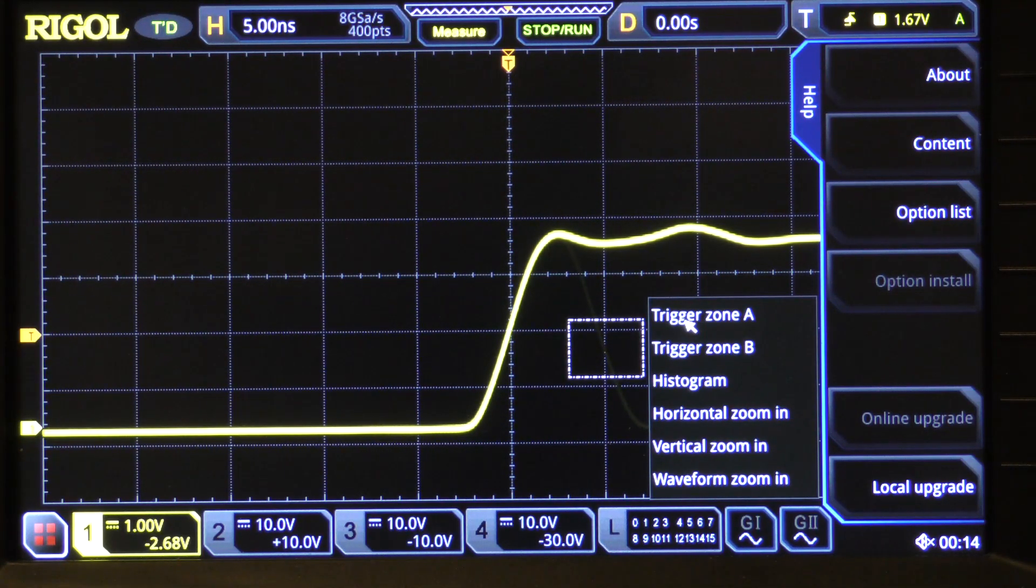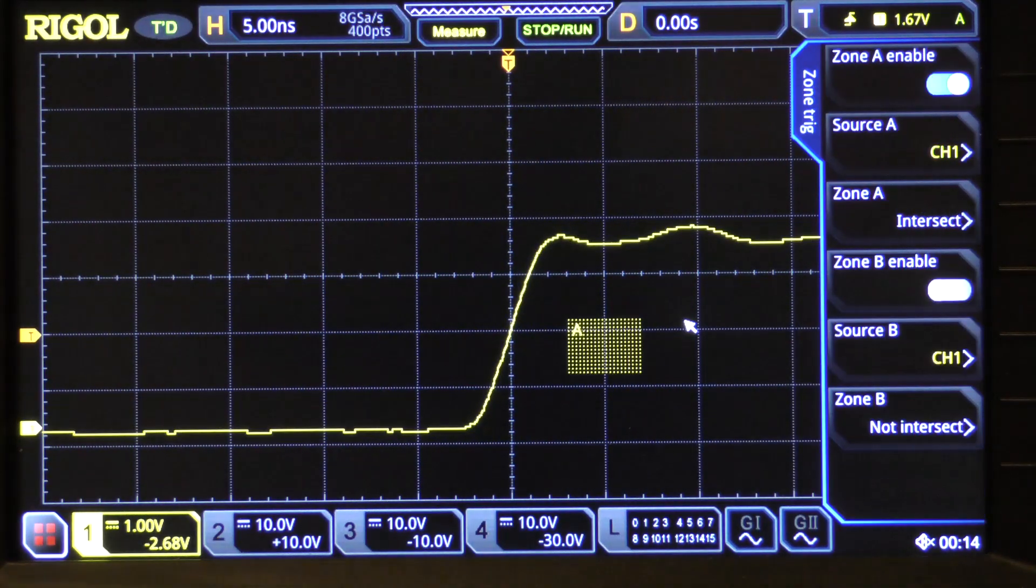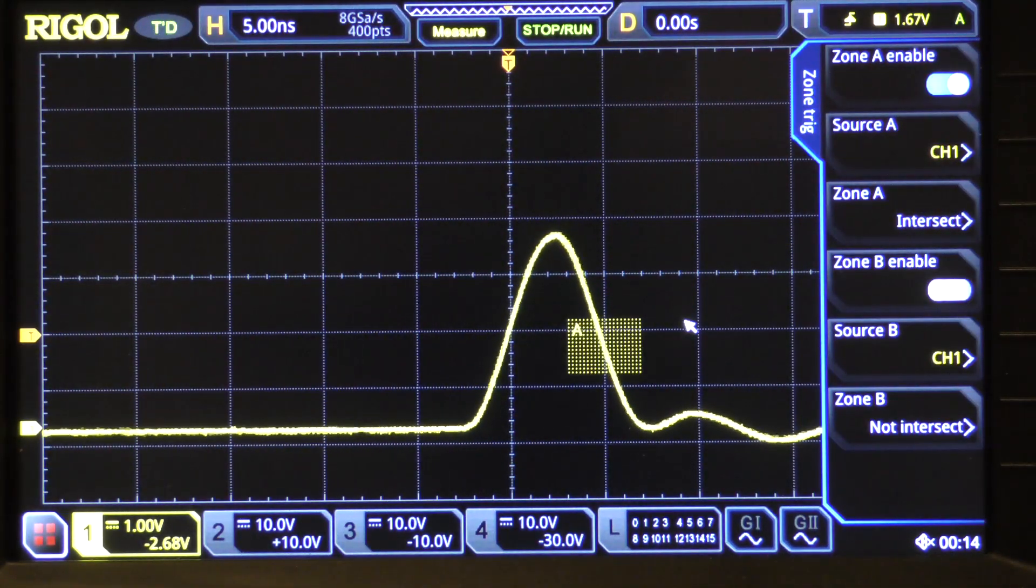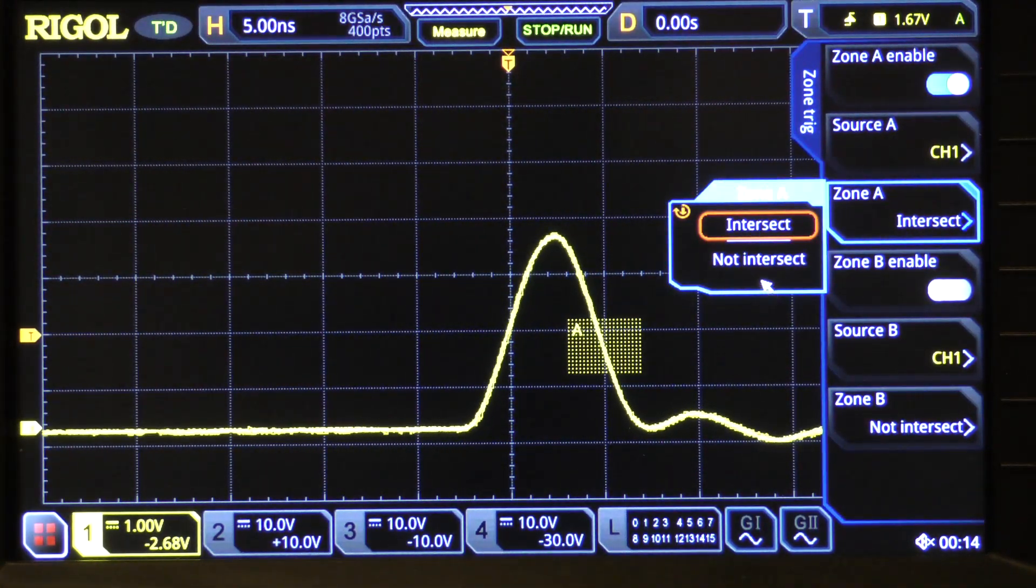What we are going to do now is click on trigger zone A and you notice that a menu comes up and says trigger zone A enable. It automatically turns on the enable by the way when you do it the way I just did it. It gives you a place for the source of that zone. It says zone A is either an intersect or a not intersect and we have selected intersect. In a minute we'll do the not intersect.